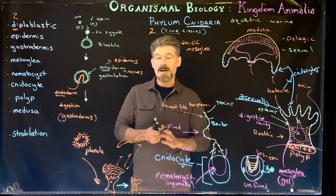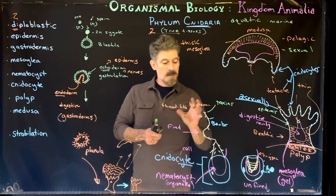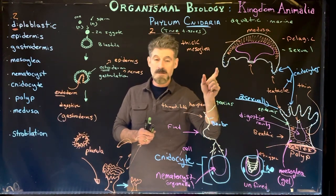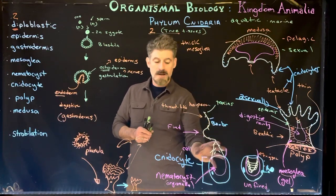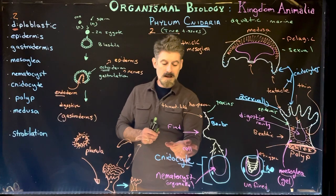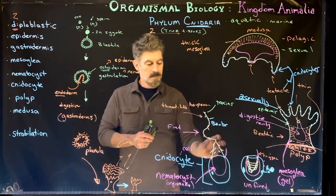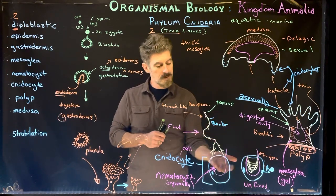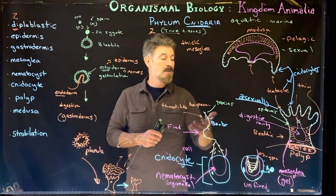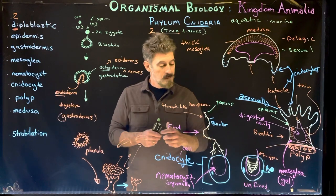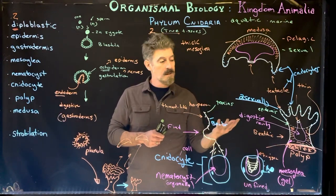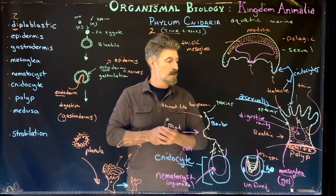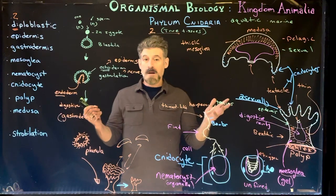The cnidocyte is the characteristic cell type exclusive to cnidarians — no other group of animals has them. Inside is the organelle called the nematocyst, which fires a harpoon-like structure under water pressure, stinging into prey or predators depending on context, to help the organism capture food or protect itself.